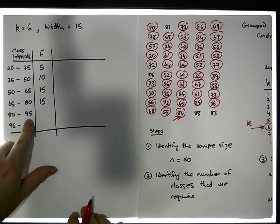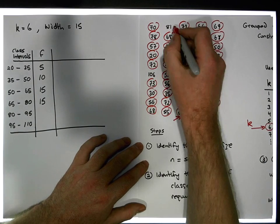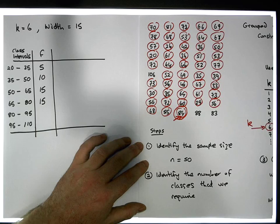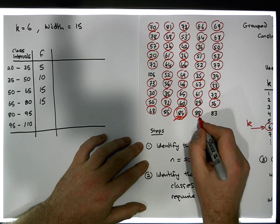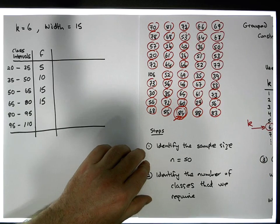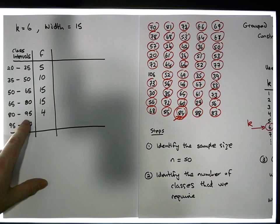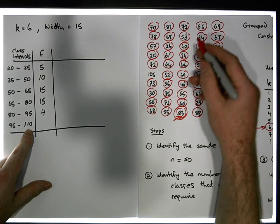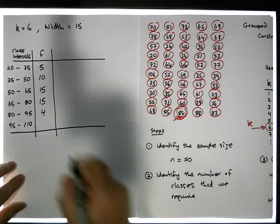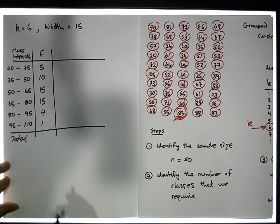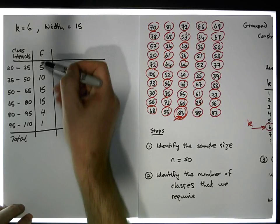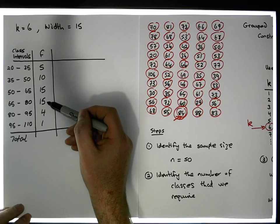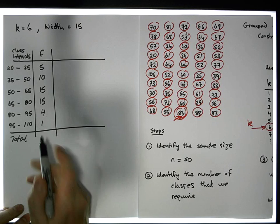How many remaining values are less than 95? There's one, two, three, four — so four values in this interval. Finally, how many remaining values are less than 110? There's only one value left. Our total should equal our sample size of 50: 5 plus 10 is 15, plus 15 is 30, plus 15 is 45, plus 4 is 49, plus 1 gives us a total of 50.